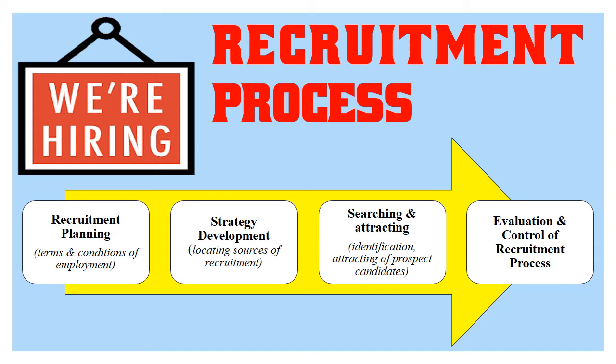The second step is strategy development, where locating and developing sources of the required number and type of employees is done. The third step is the identification of prospective employees with the desired characteristics. Various methods are used to attract the desired number of employees — the company's image and policies attract new employees, and attractive salaries and proper facilities for growth and development also help in attracting more and more candidates.